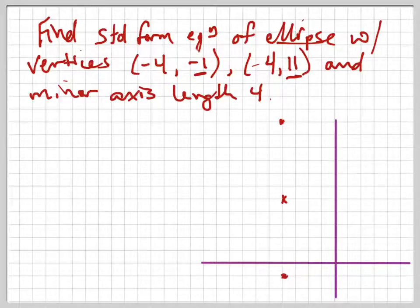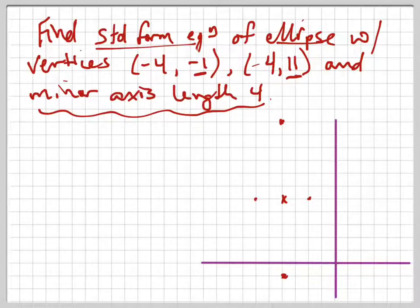And from the center, it says the minor axis length is 4. That means I have to go 2 to the left, I'm sorry, right, and 2 to the left, and there's the minor axis length of 4. And it says find the standard form equation for that ellipse.